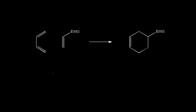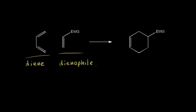The Diels-Alder reaction is a very important reaction because it's used a lot in synthesis to make complicated molecules. On the left we have our diene, so we have two double bonds in that molecule. On the right is our dienophile. We know that 'phile' means love, so the dienophile loves the diene.